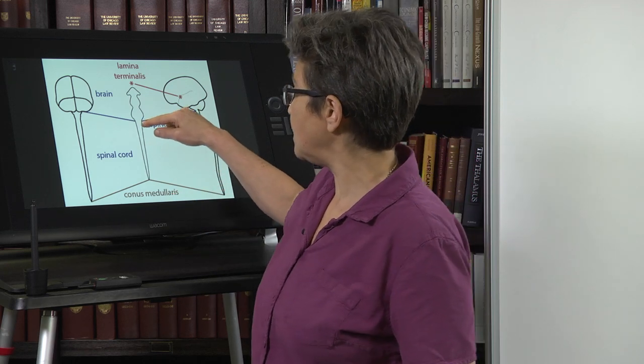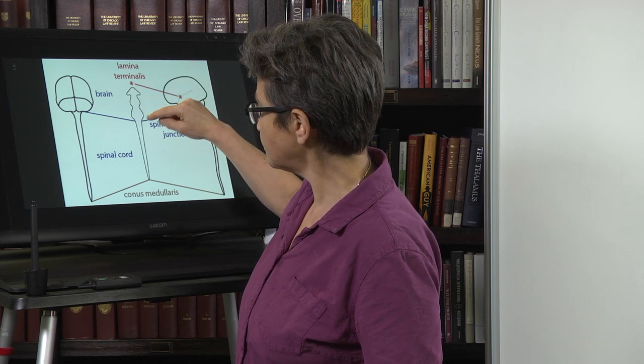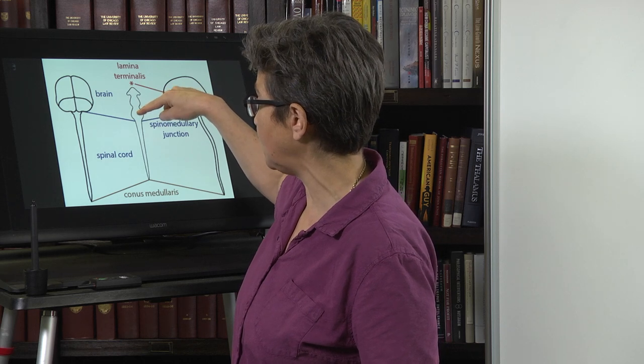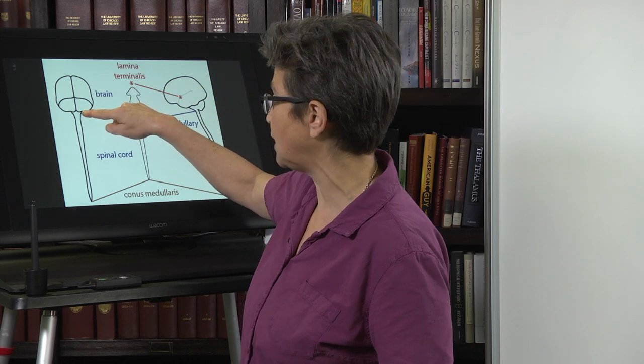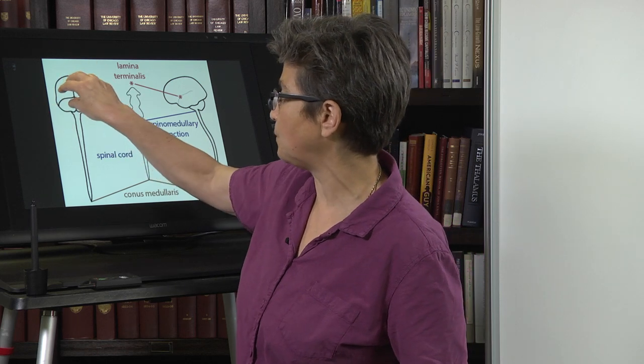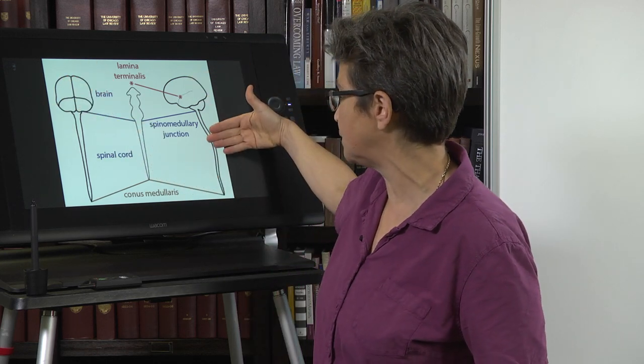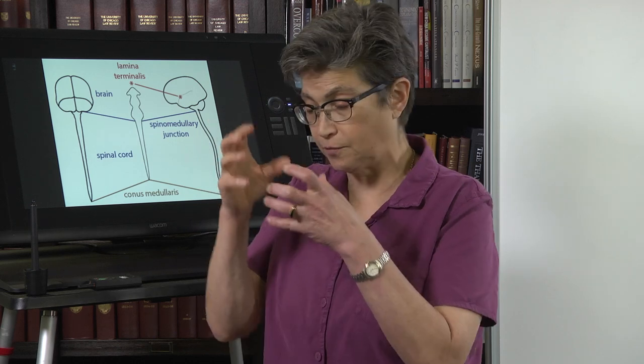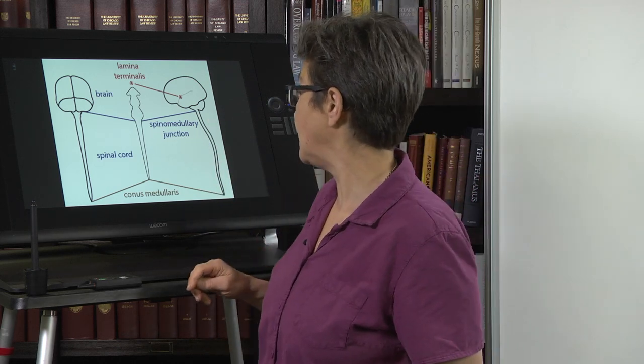These vesicles, these swellings, are going to give rise to the brain. The junction between the spinal cord and the brain is the spinal medullary junction. This is viewing the brain from the back, and this is viewing the brain and spinal cord from the side. The spinal medullary junction sits right where the foramen magnum is, where the skull begins and the vertebral column ends.